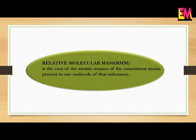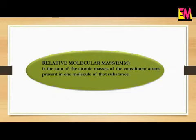The relative molecular mass is obtained by adding together the relative atomic masses of all the various atoms present in a molecule. So the relative molecular mass of an element or a compound is the number that represents how many times one molecule of the substance is heavier than 1/12th of the mass of an atom of C12.